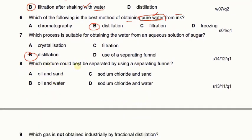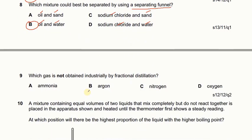Which mixture could best be separated using a separating funnel? A separating funnel is used to separate a mixture of immiscible liquids. Oil and sand cannot be used because sand is a solid. Oil and water — yes, they are both liquids and are immiscible. Sodium chloride and water cannot be used because sodium chloride is a solid. So B, oil and water, is the answer.